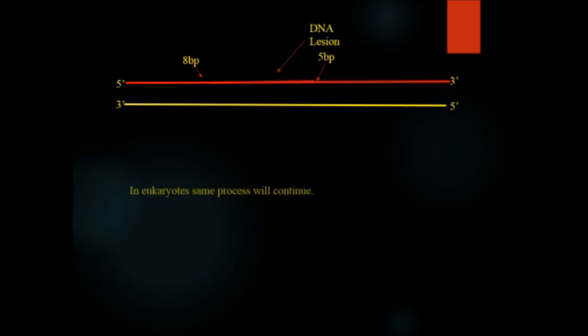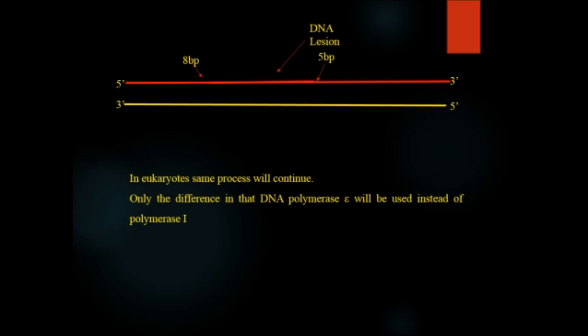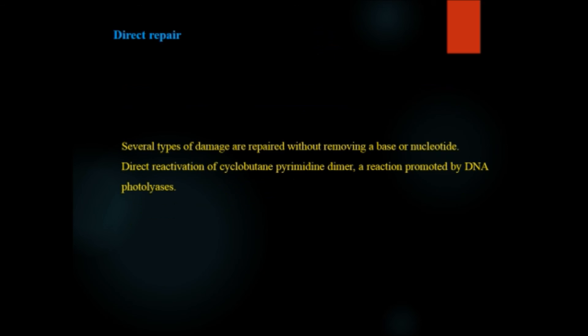In eukaryotes, the same process continues. Only the difference is that DNA polymerase epsilon will be used instead of polymerase 1. Direct repair - several types of damage are repaired without removing a base or nucleotide. For example, direct reactivation of cyclobutane pyrimidine dimers, a reaction promoted by DNA photolyase.